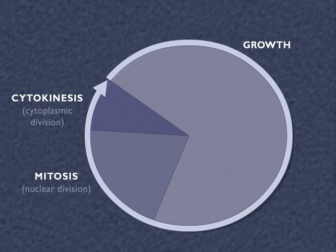Most eukaryotic cells follow a process of growth and division called the cell cycle. These events include a growth stage, mitosis or nuclear division, and cytokinesis, or division of the cytoplasm.